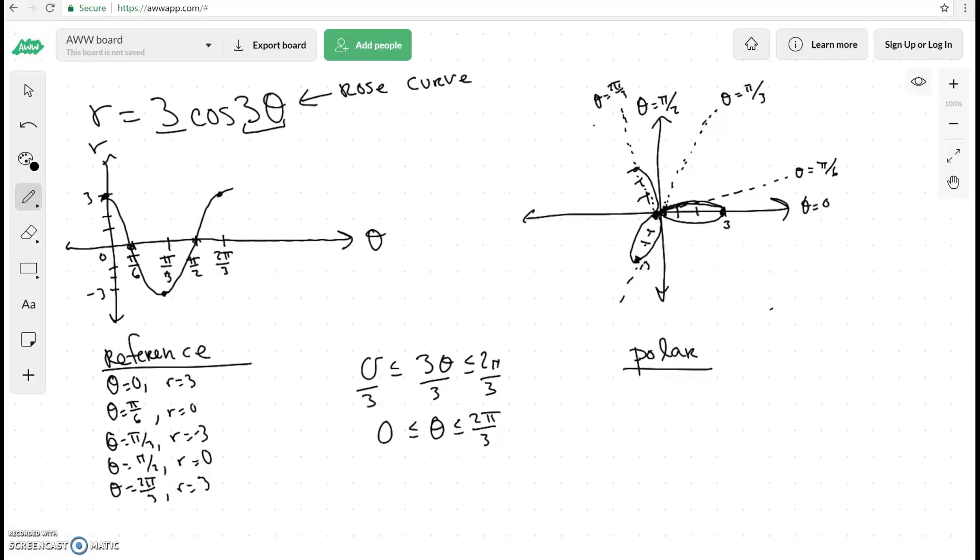All right, now as you can see, we didn't really complete the graph, but we can if you want to, because what you can do now, you can start adding more increments. So after 2 pi over 3, what's going to be next?